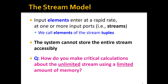In the stream model, input elements enter at a rapid rate at one or more input ports. Elements coming to one port form one stream; elements coming to multiple ports form multiple data streams simultaneously. We call these elements tuples. The system cannot store the entire stream, so the question is: how do we make critical calculations about the unlimited stream using a limited amount of data?